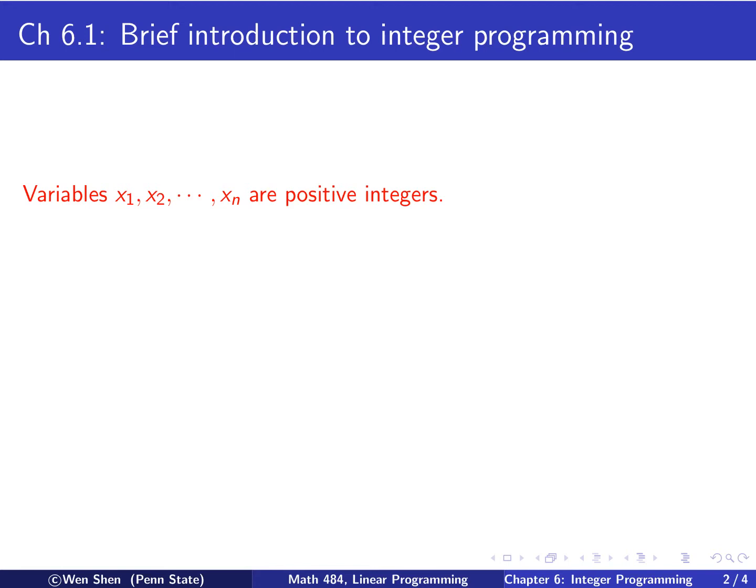They can be zero also. And the rest of the setting remains the same. There will be an objective function and a bunch of constraints, just as before.